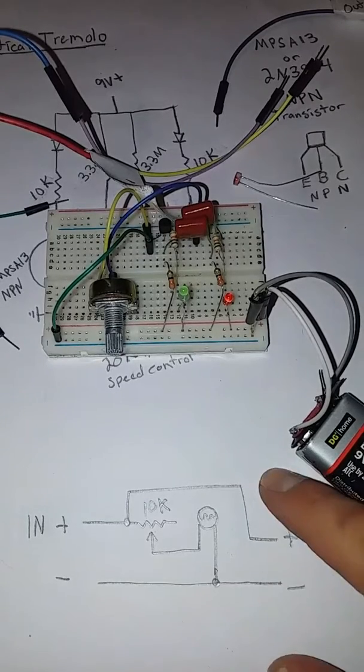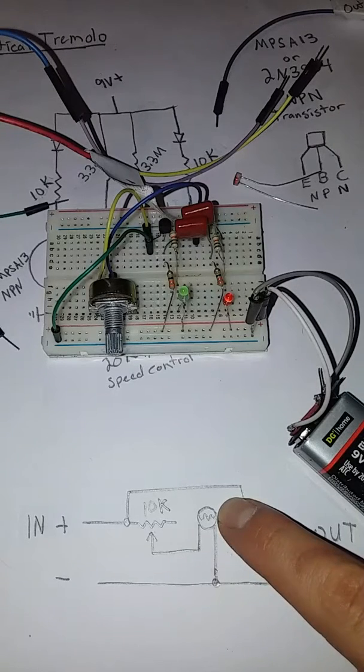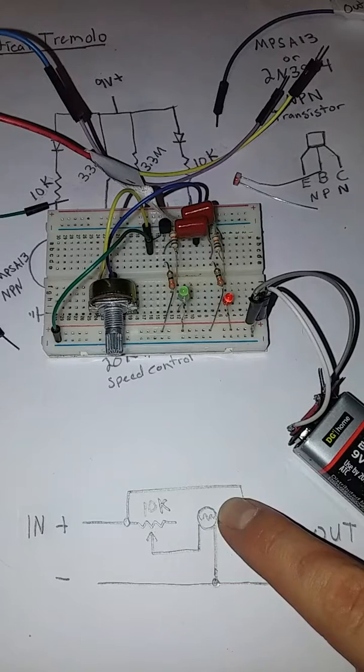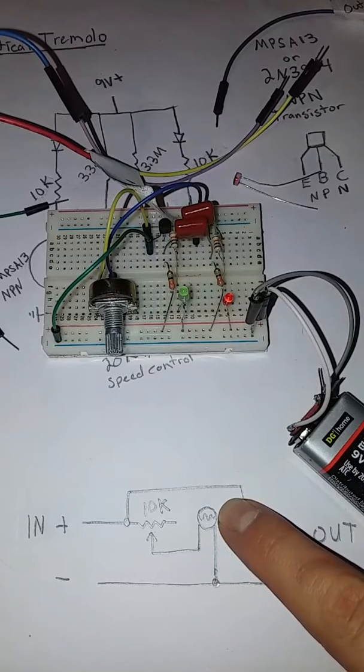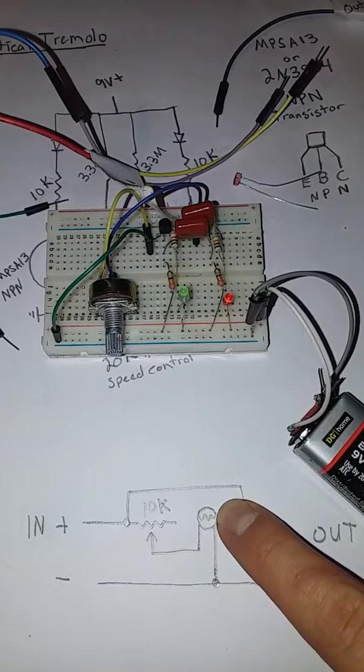Basically, we're going to have the flashing LED butted up against this photoresistor, and that is going to cause a pulsating resistance which is going to cause our volume to go up and down each time it applies full resistance when the light goes out.